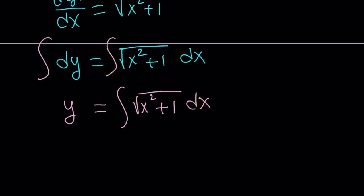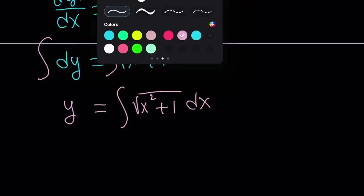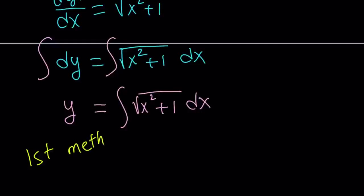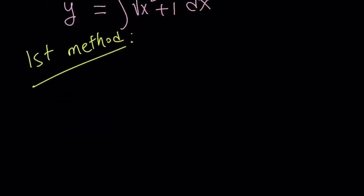So let's go ahead and start with the first method. I'll be presenting two methods, by the way. The first method involves Euler's substitution. Here's how we can solve this. First of all, let's go ahead and set square root of x squared plus 1 equal to x plus t. And then we're going to square both sides.